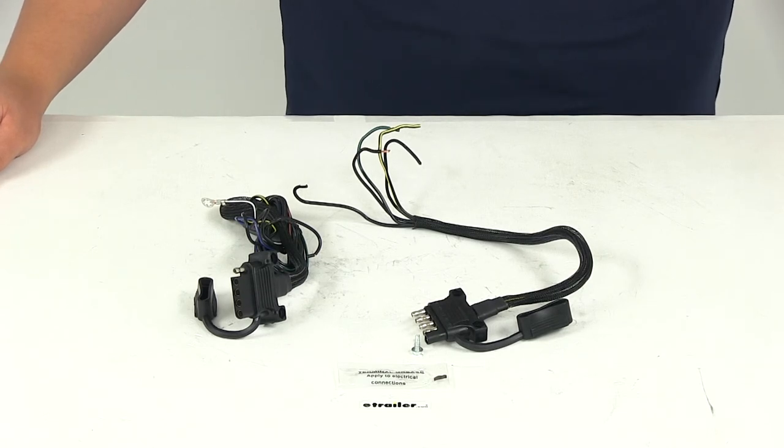That's going to do it for our review of part number HM47890, the Hopkins Endurance five-way flat trailer wiring kit.